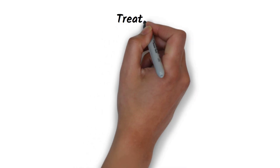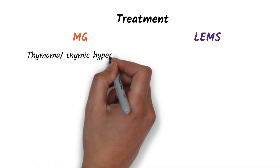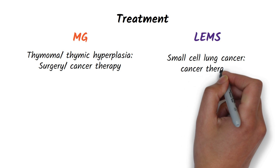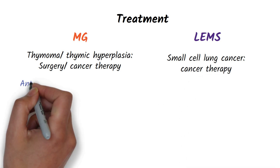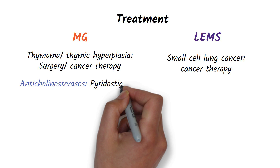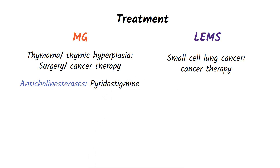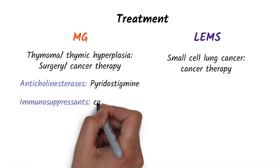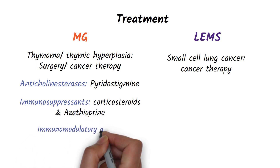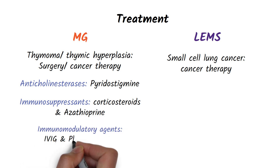Now let's move on to treatment. If the disease is due to a thymic mass or lung cancer, resect it or treat the cancer. Myasthenia Gravis can be treated with anticholinesterase therapies like pyridostigmine, immunosuppressants like corticosteroids and azathioprine, and immunomodulatory agents such as IVIG and plasmapheresis.